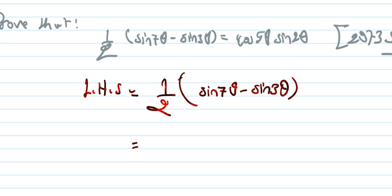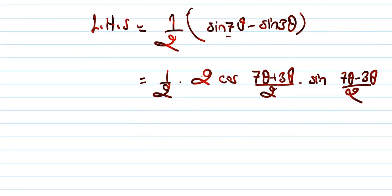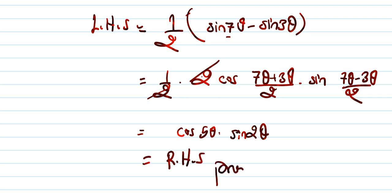sin C − sin D = 2·cos((C+D)/2)·sin((C−D)/2). So (1/2)·2·cos((7θ + 3θ)/2)·sin((7θ − 3θ)/2) = cos(10θ/2)·sin(4θ/2) = cos5θ·sin2θ = RHS. Hence proved.